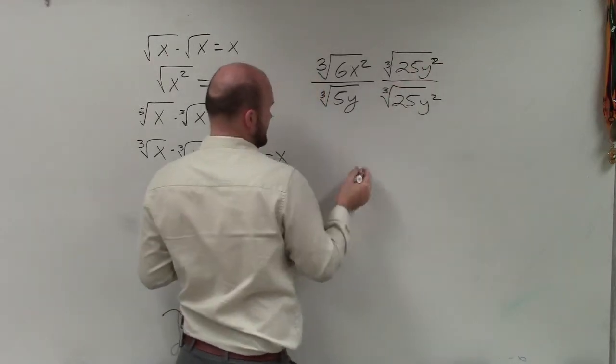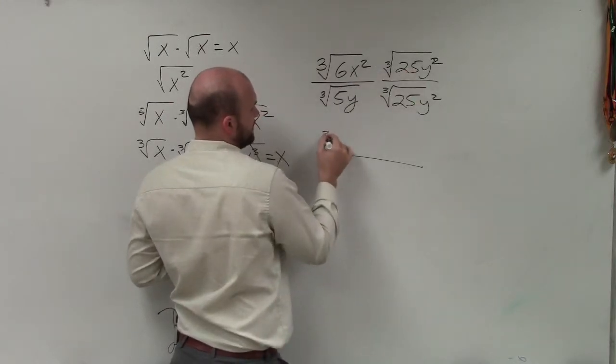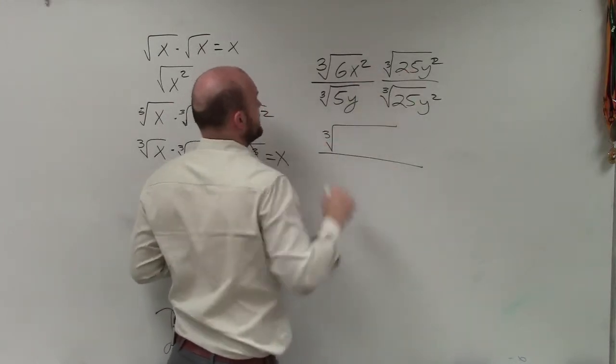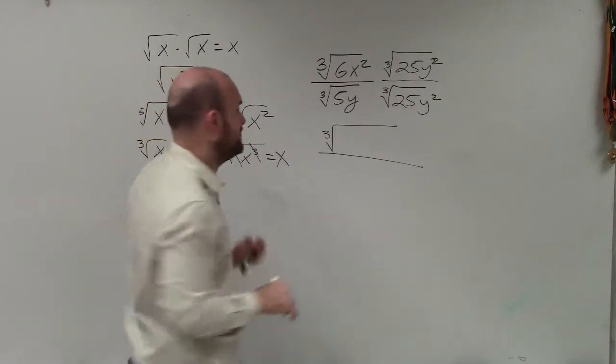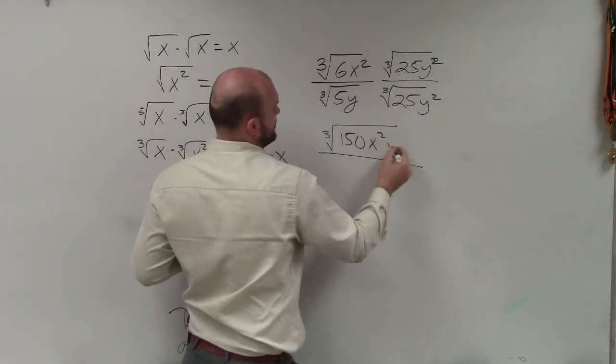All right, so let's go and do the numerator first here. So when I do the numerator, I can multiply my radicands together. So I have the cube root of 6 times 25 is going to be 150, x squared times y squared is just x squared times y squared.